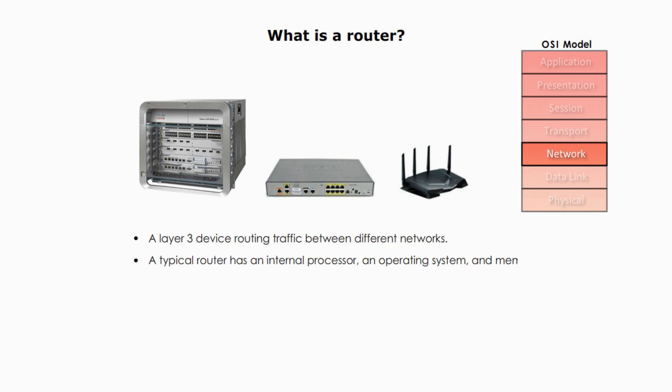Like our computer, a typical router has an internal processor, an operating system, and memory. We can have different types of routers based on different criteria. For example, on a sophistication level, some routers are simple, like SOHO routers, and some routers are very sophisticated and powerful, like the internet backbone routers.